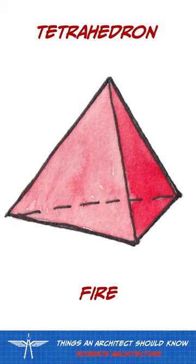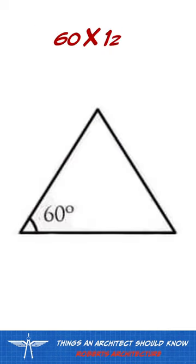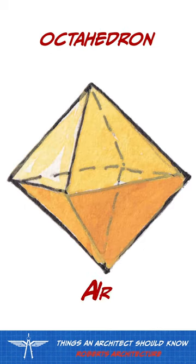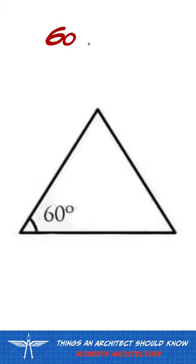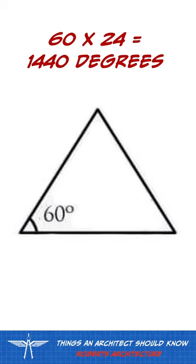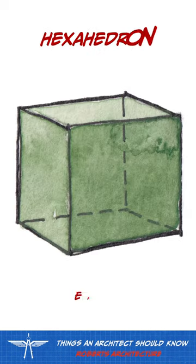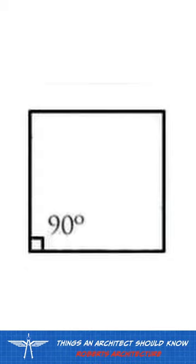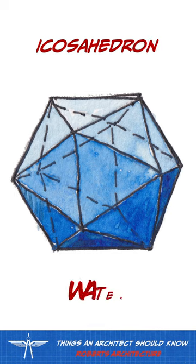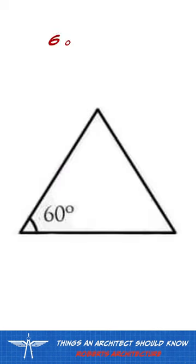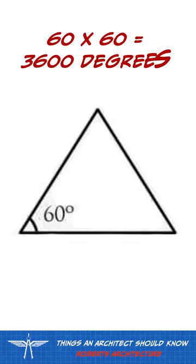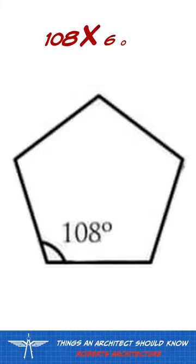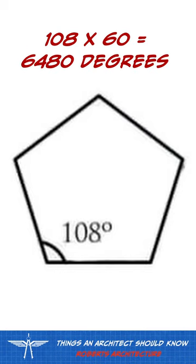A tetrahedron is composed of three angles of 60 degrees on each side and 12 angles total. An octahedron is composed of three angles of 60 degrees on each side and 24 angles total. A hexahedron is composed of four angles of 90 degrees on each side and 24 angles total. An icosahedron is composed of three angles of 60 degrees on each side and 60 angles total. A dodecahedron is composed of five angles of 108 degrees on each side and 60 angles total.